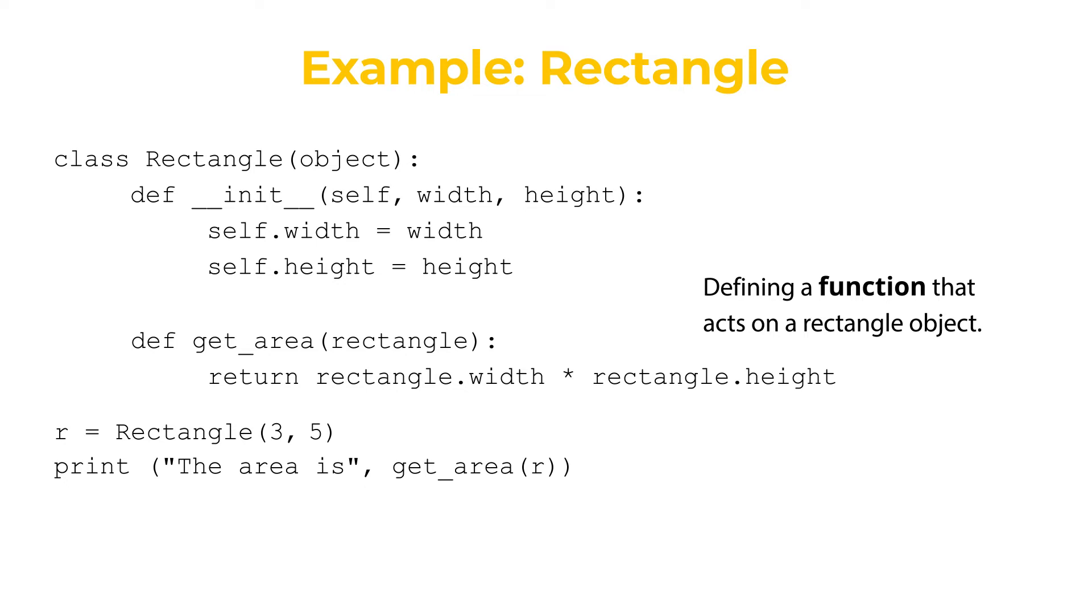If get_area was a method, we would call it as r.get_area(). That would be the syntax. Now, in order to turn this function into a method, I need to put it inside the class. So let's indent the code and put the function inside the class. And that's really it. get_area is now a method instead of a function.